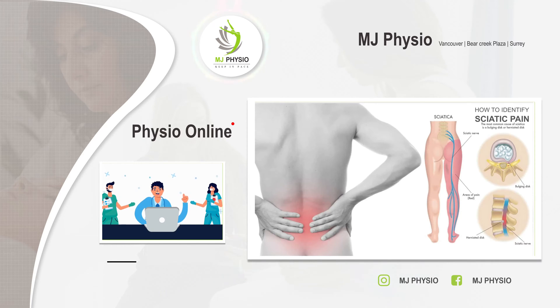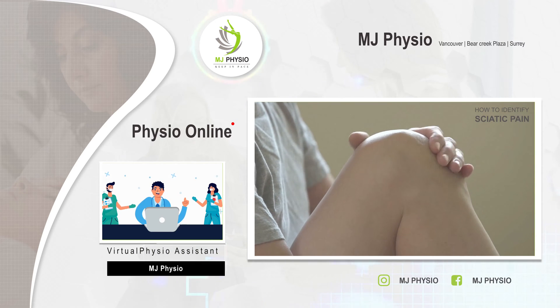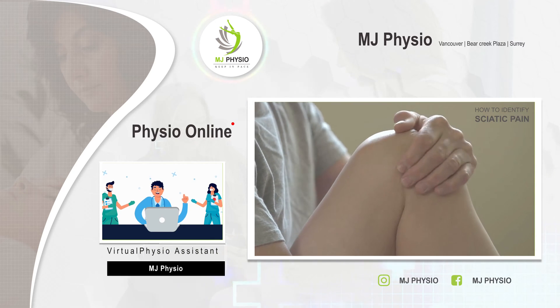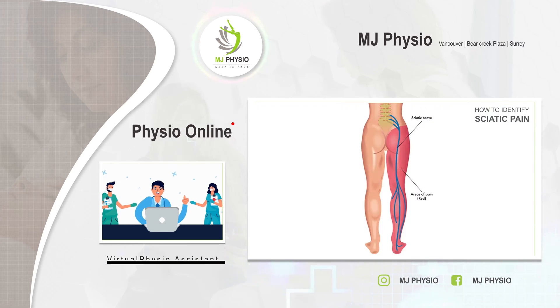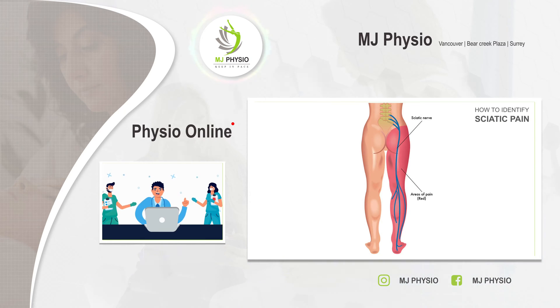The leg pain often goes past the knee and may go to the foot. Weakness in the leg muscles and limping can be a sign of sciatica. The sciatic nerves are the largest nerves in the body and are about the size of the little finger.